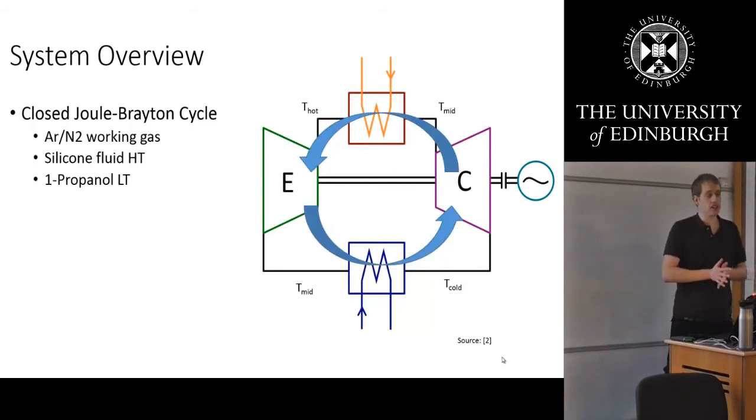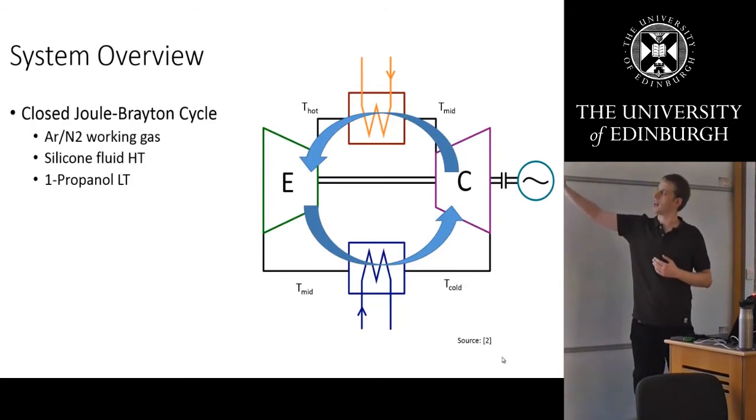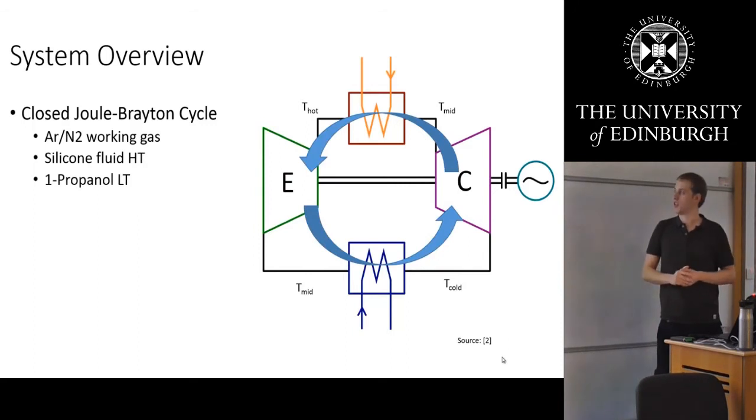When you need energy, when you need to generate it, you basically switch the compressor and the expander. So you switch the direction. I mean, these are illustrated as turbo machinery. Here you would switch the direction. It's not that easy, but essentially now you're running the whole thing in reverse. You're taking your cold stuff, you're compressing it back up to a mid-temperature, you're injecting your heat, you expand it back down again, and you get electricity back.